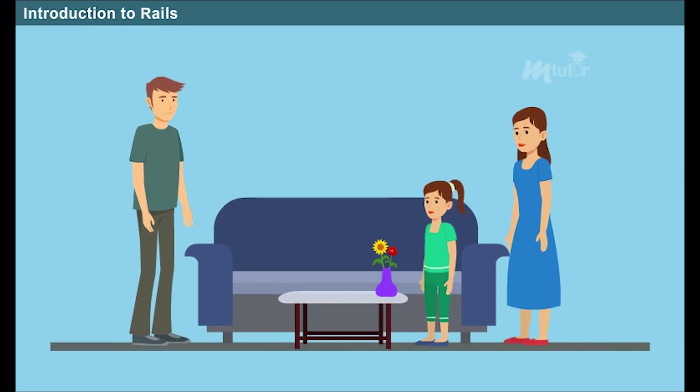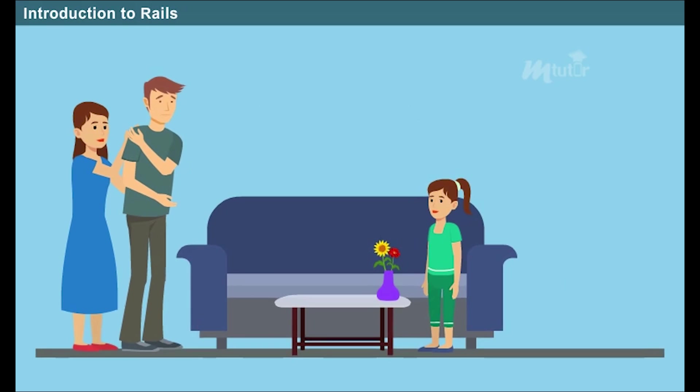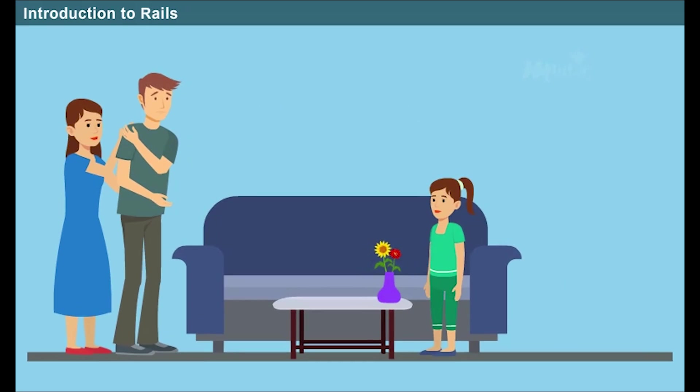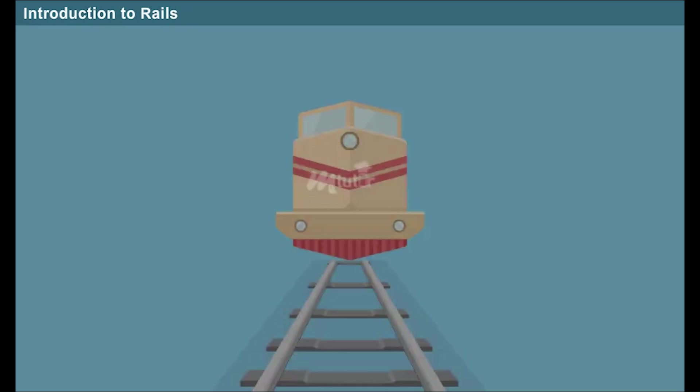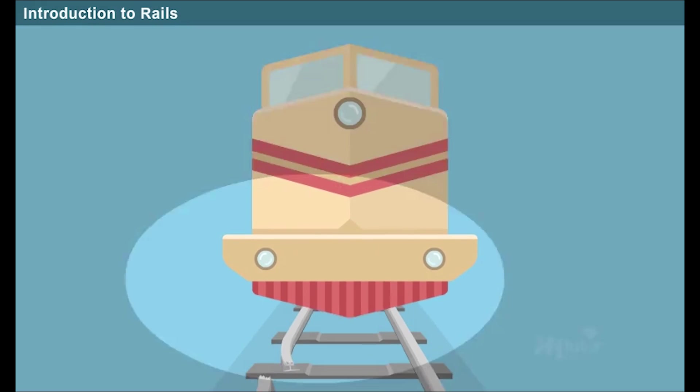A family is happy and content when its individuals are supportive of each other. Parents who are understanding and supportive of each other set up a perfect example for the children to follow. Similarly, the rails of a railway track work together for the proper functioning of railways.